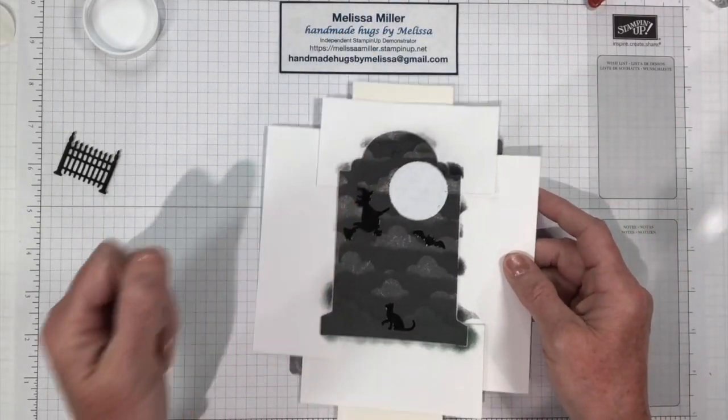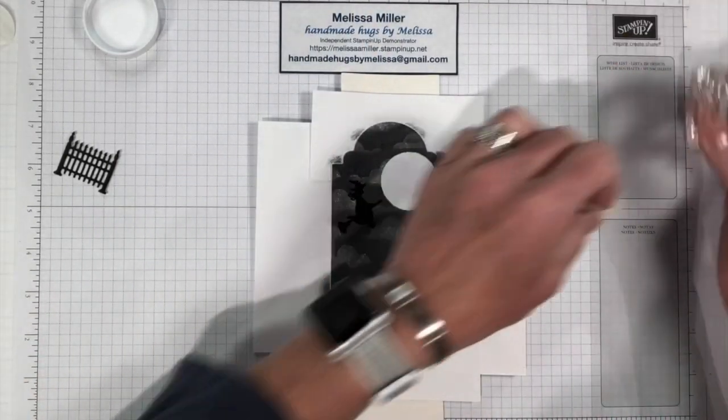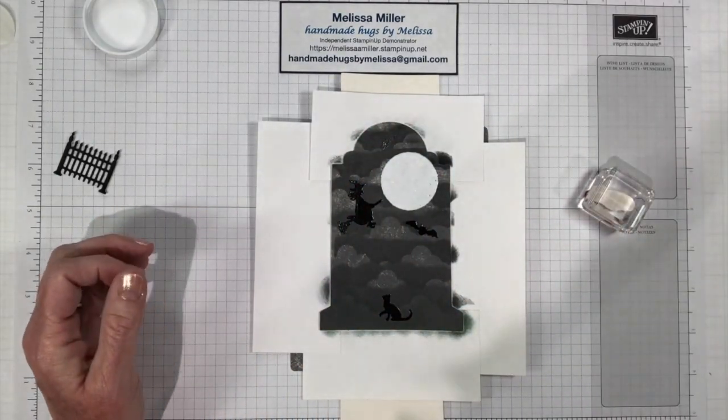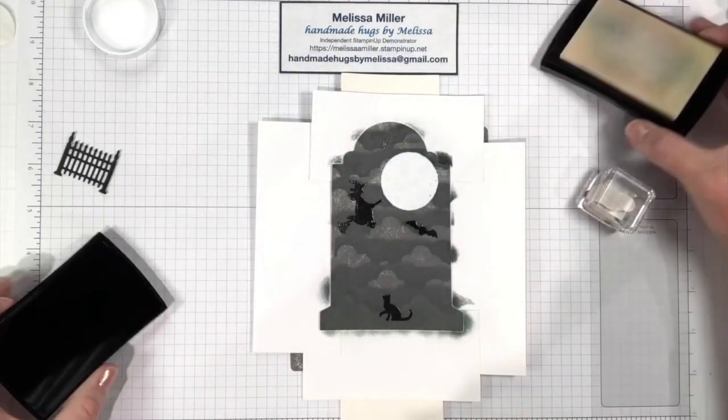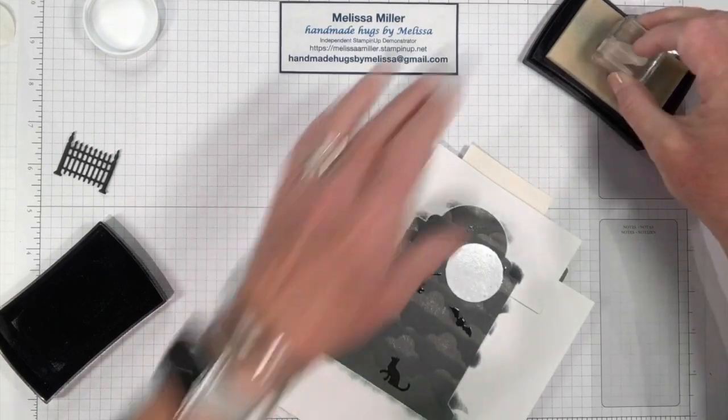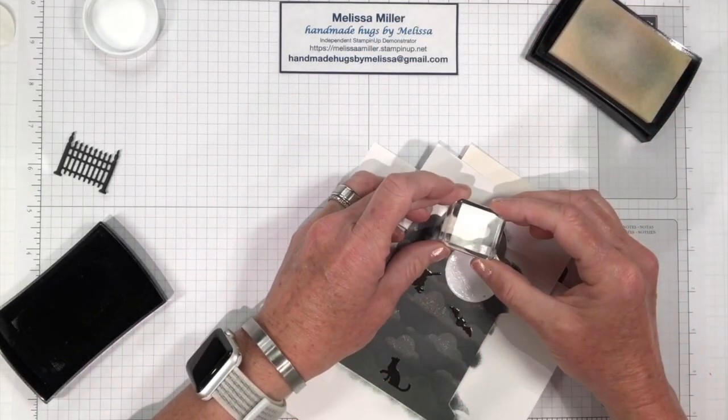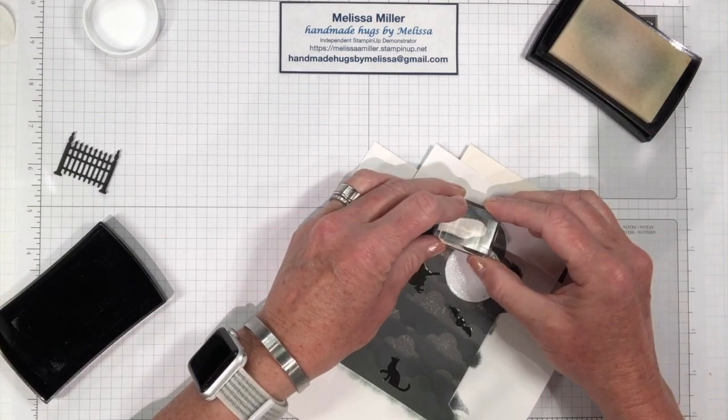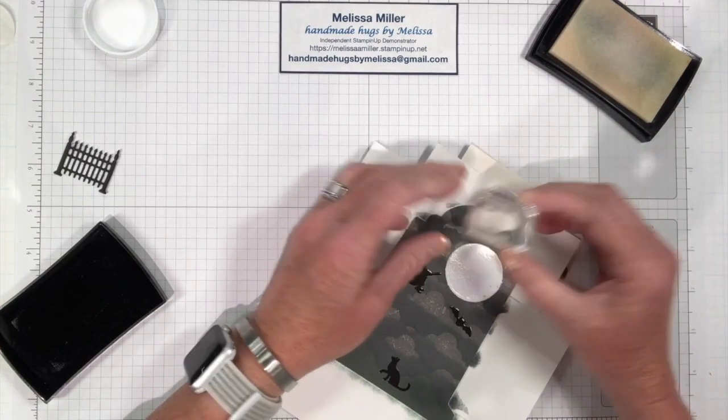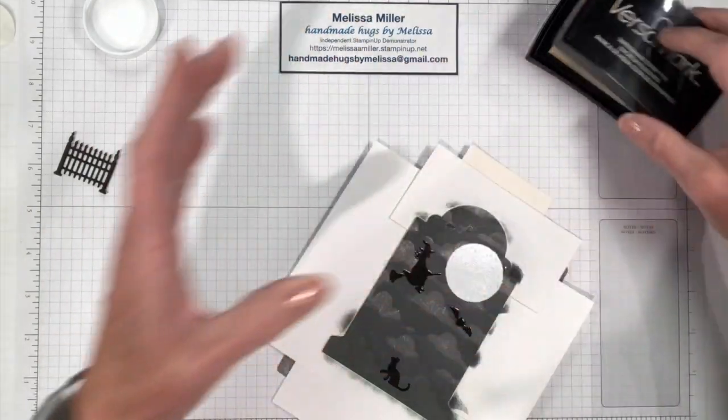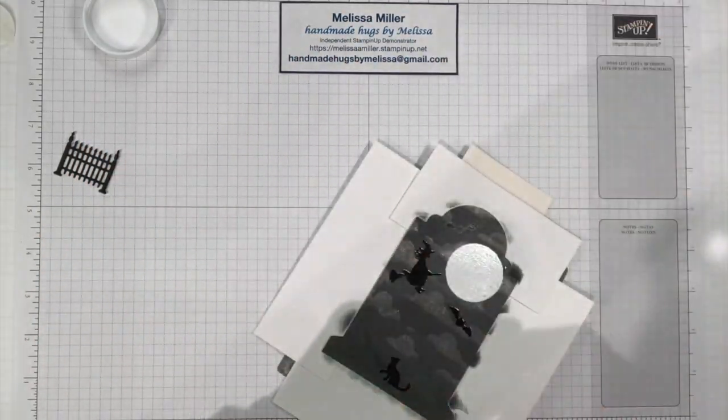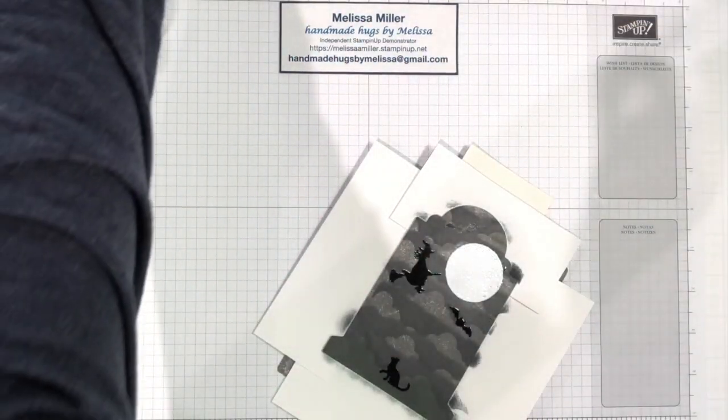It looks like I forgot to do the other bat. We need to do another bat on there so we will put him on our block. We're going to ink that up with our Versamark and we're going to need to bring in our black again. Let's put our bat right there. Don't rock. Just firm pressure. Don't rock the stamp.